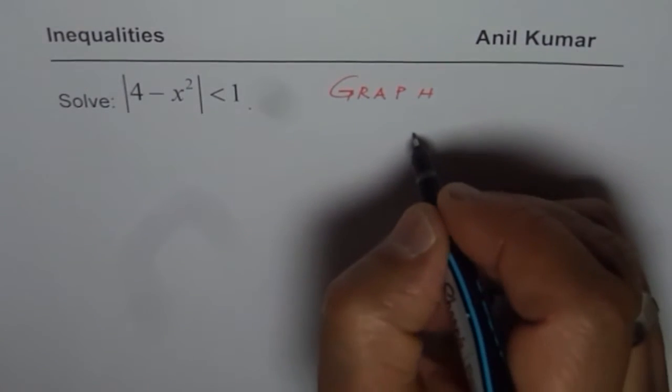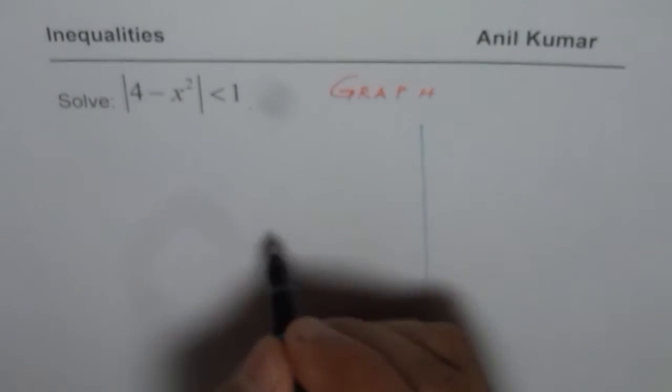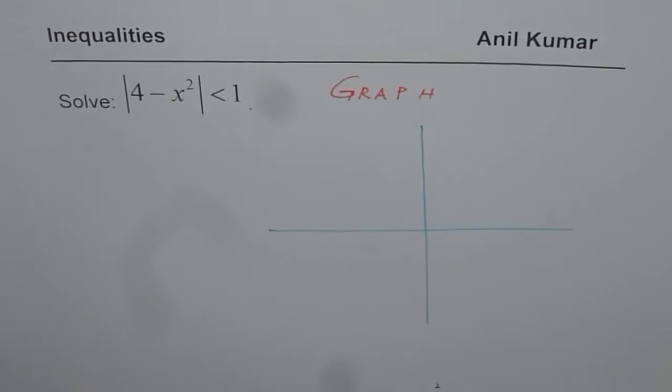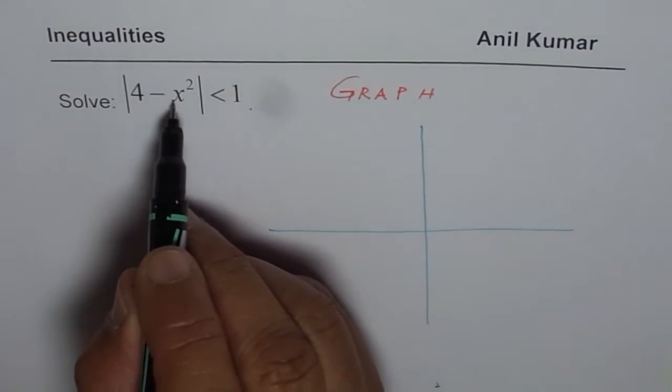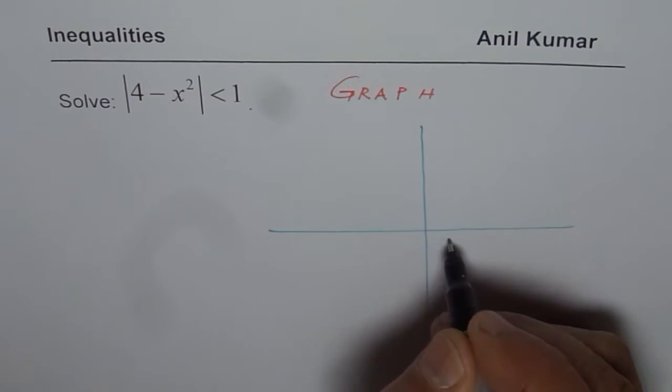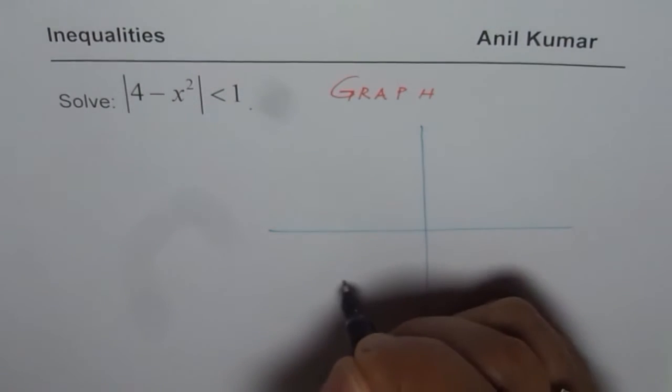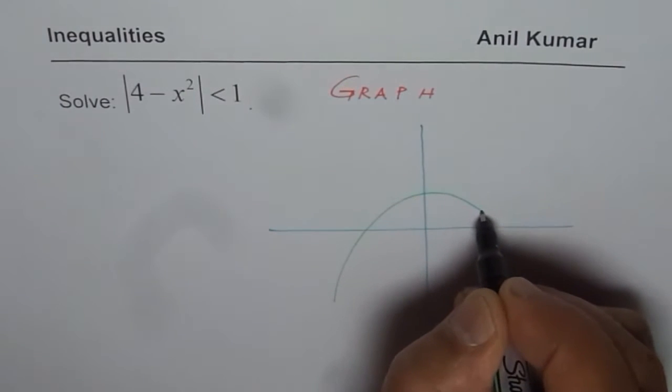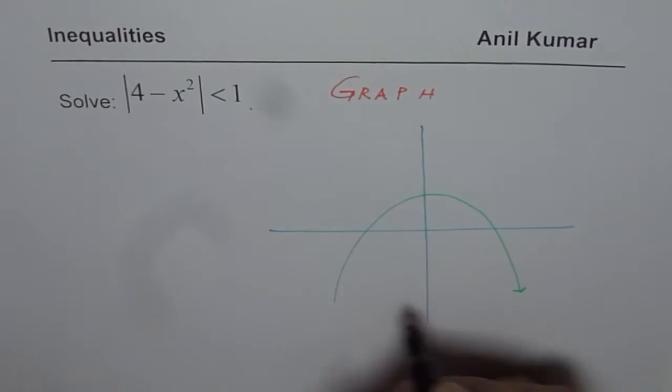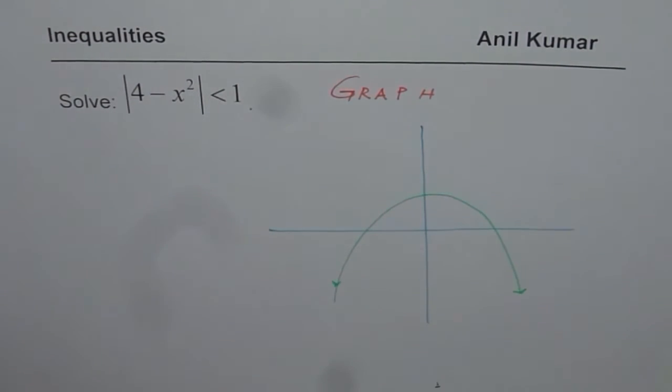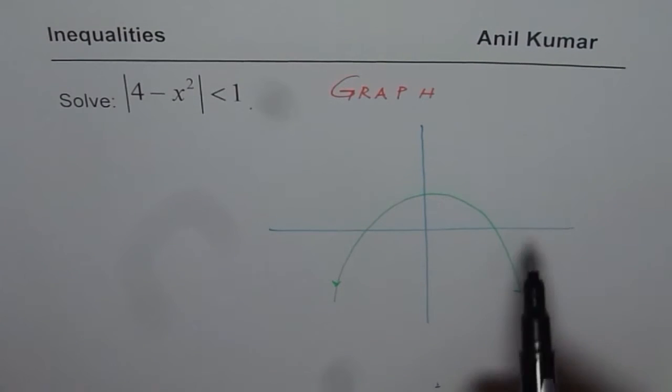So let's begin first step. Let me sketch for you the function 4 minus x squared. So 4 minus x squared means inverted parabola moved 4 units up. So it is kind of function which is like this. So that is how the function will be and this is the first step.